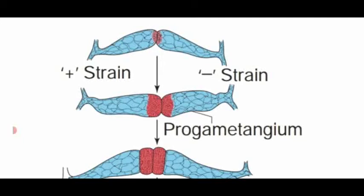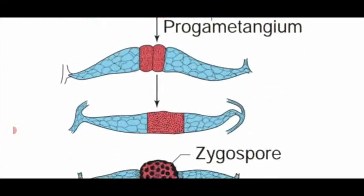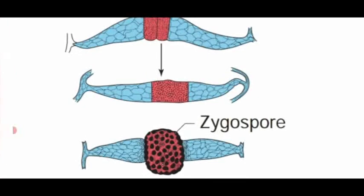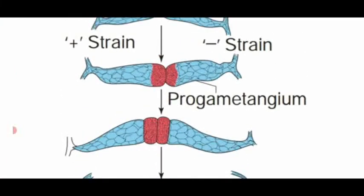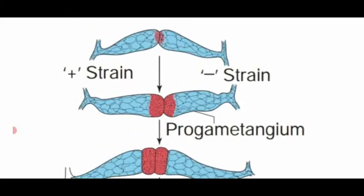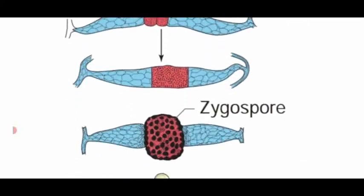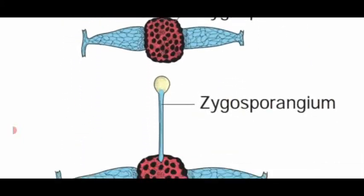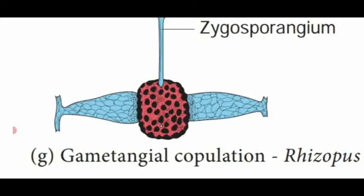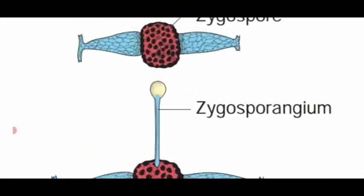This diagram is given in your textbook not in the life cycle of Rhizopus section but in the general characteristic features of fungi, under the topic sexual reproduction in fungi. This is the diagram showing gametangial copulation. You have to draw this diagram when answering a 5-mark question about how sexual reproduction takes place in Rhizopus fungi, explained with a detailed diagram.